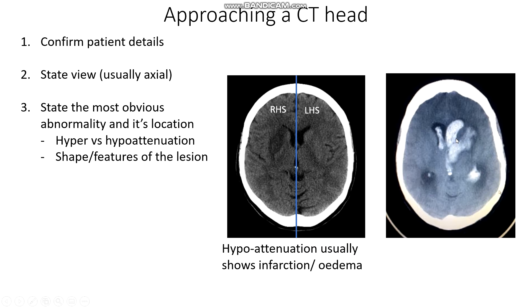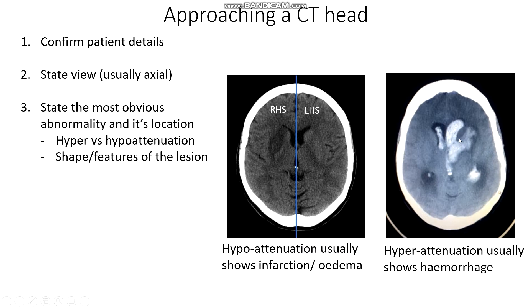Usually hyperattenuation on a CT scan shows acute blood or a hemorrhage. And in this case, the blood has actually spilled from the brain parenchyma into the ventricles, which is why it looks like this shape.